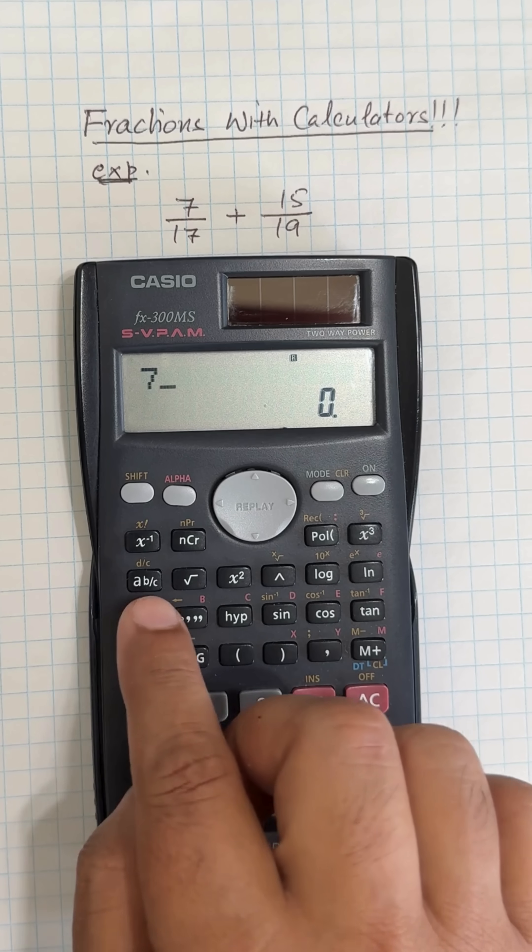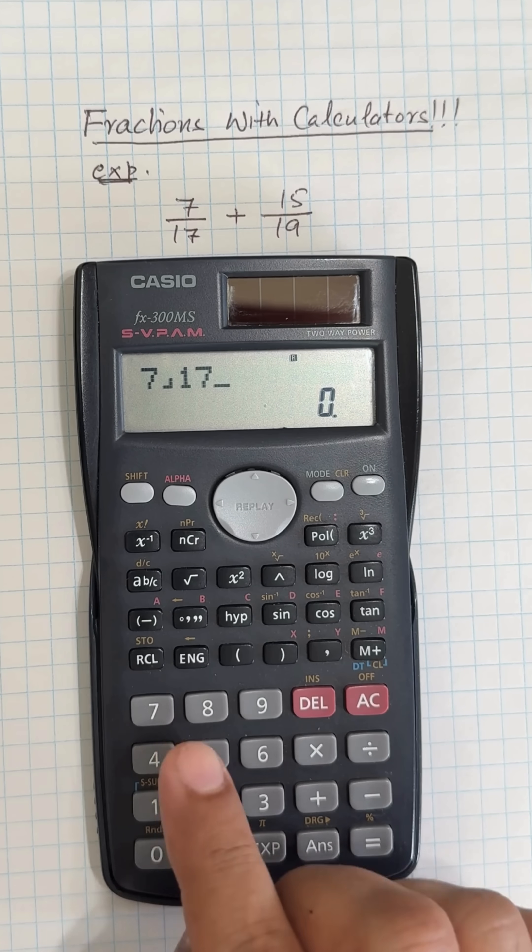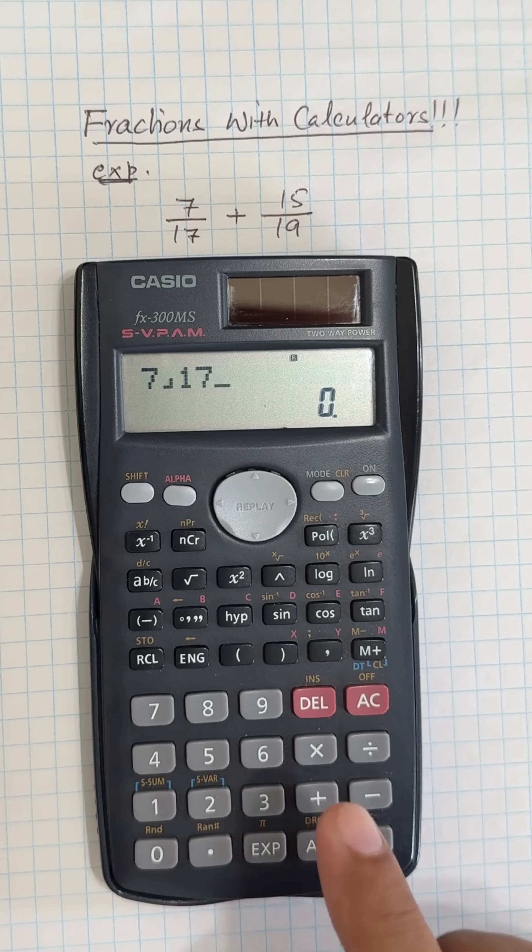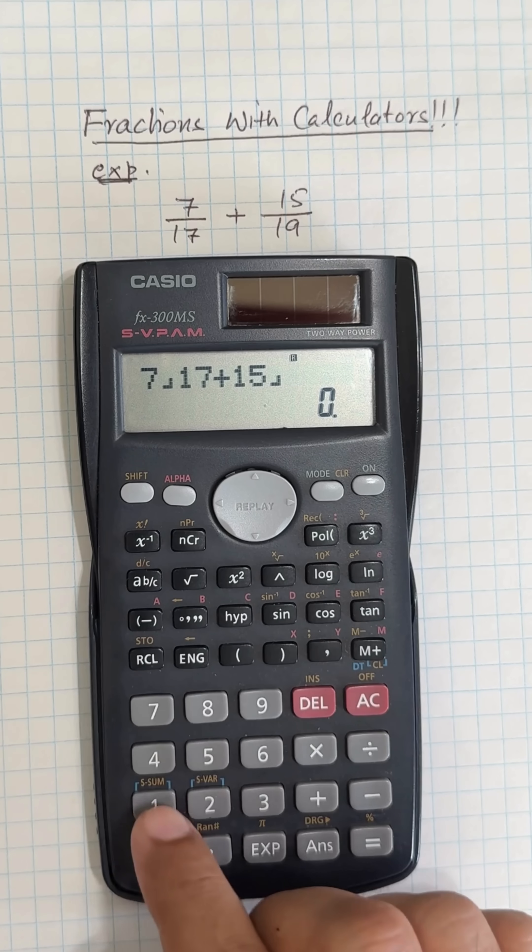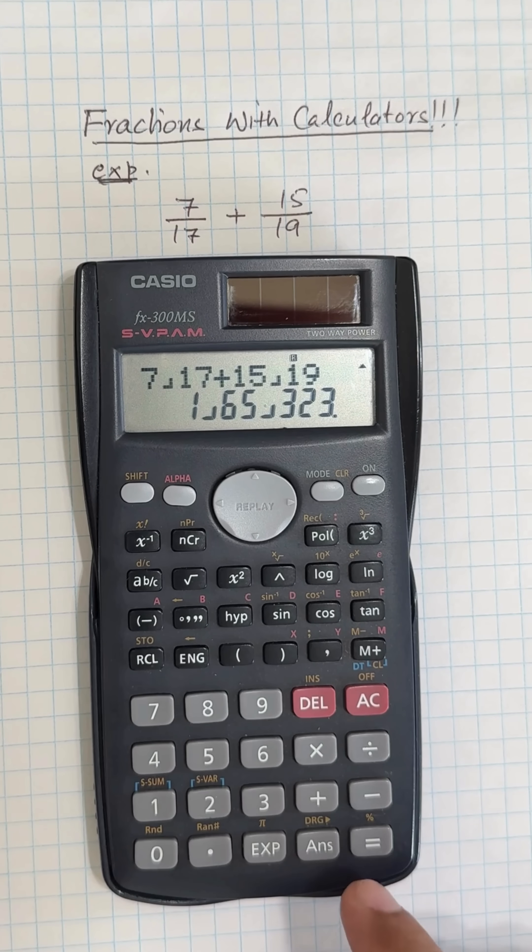Press 7, then this button, then 17. You will see a horizontal line in the opposite direction - that means it's over. Press plus, then add 15, and use the same button again, then 19, and press equal. You're done.